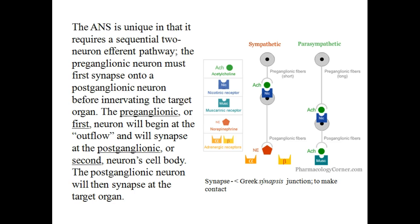The ANS is unique in that it requires a sequential two-neuron efferent pathway. The preganglionic neuron must first synapse onto a postganglionic neuron before it enervates the target organ. The preganglionic or first neuron will begin at the outflow and will synapse at the postganglionic or second neuron's cell body. The postganglionic neuron will then synapse at the target organ. A synapse is a junction that makes contact.